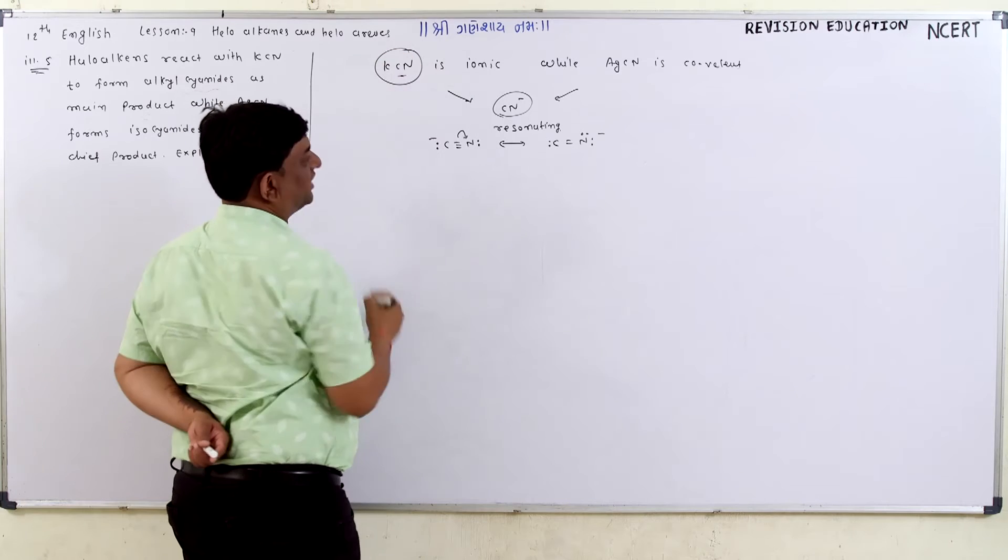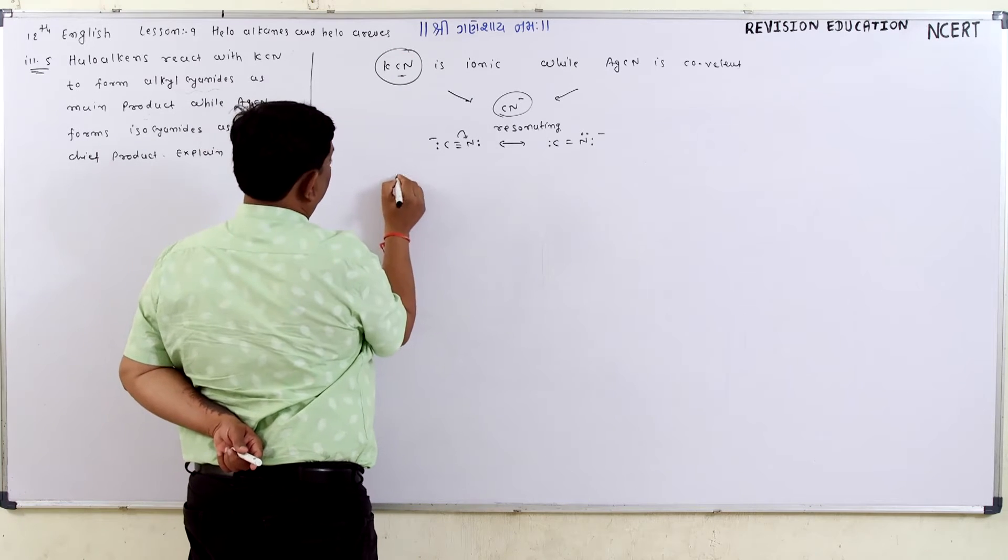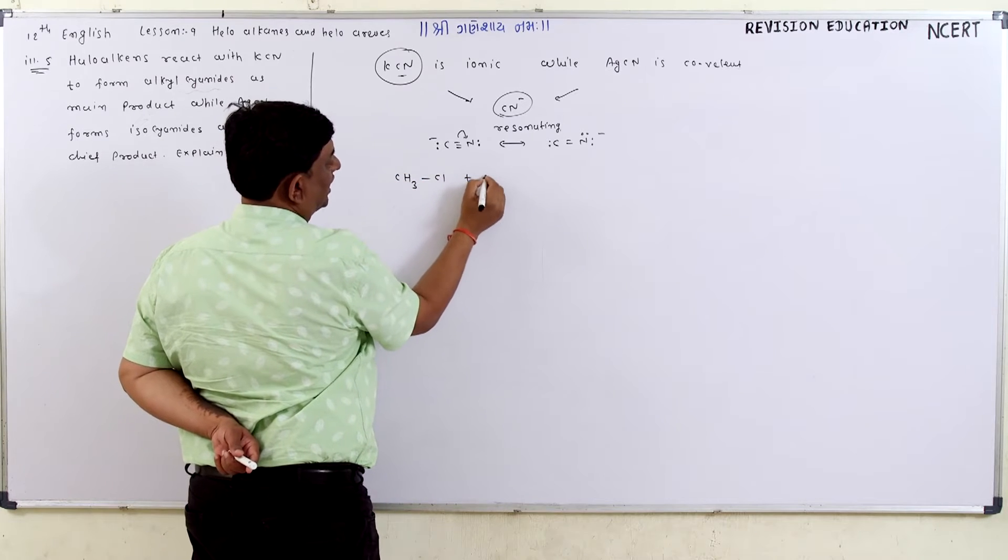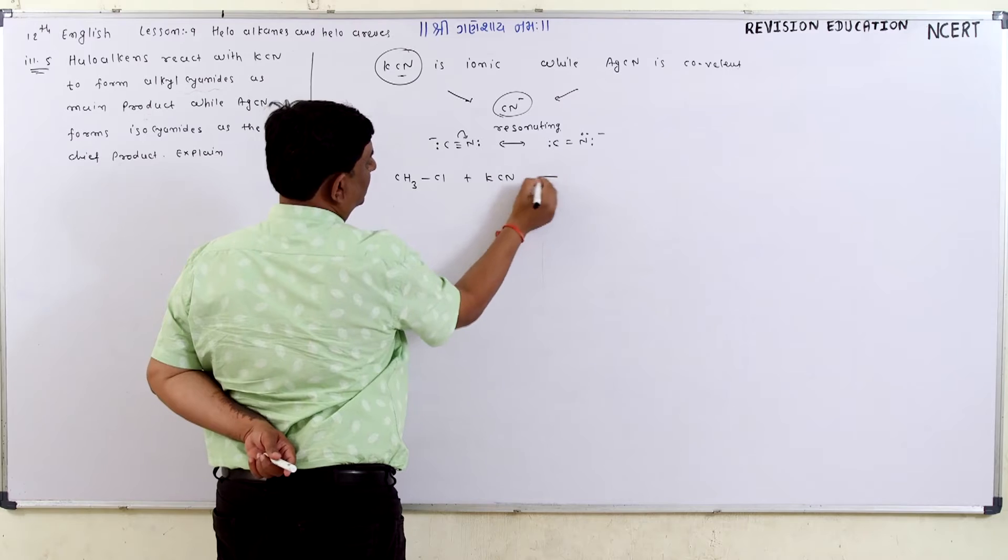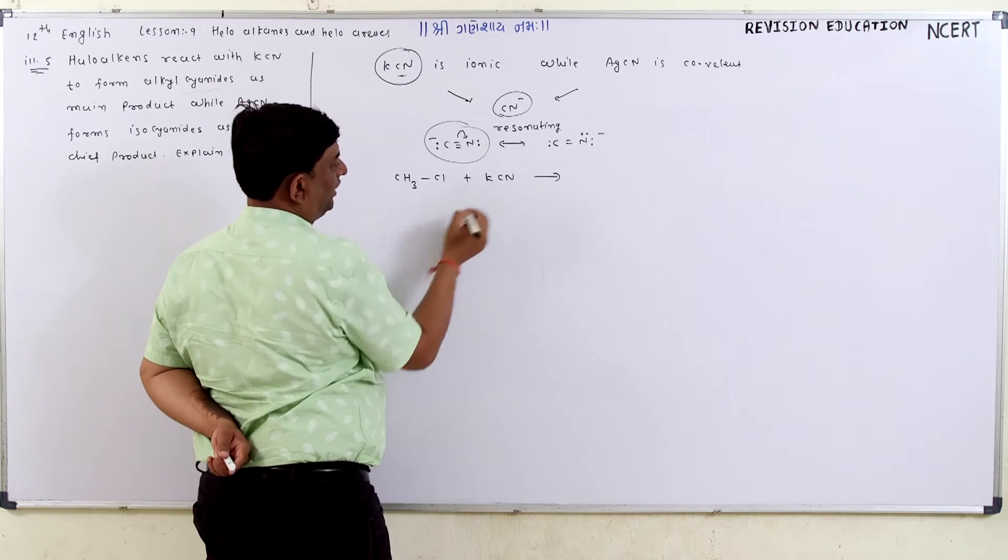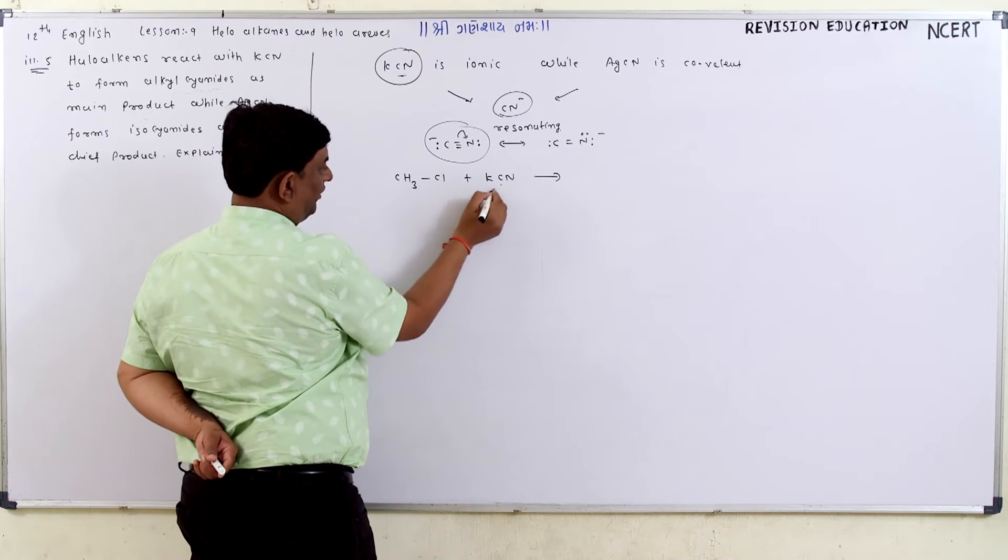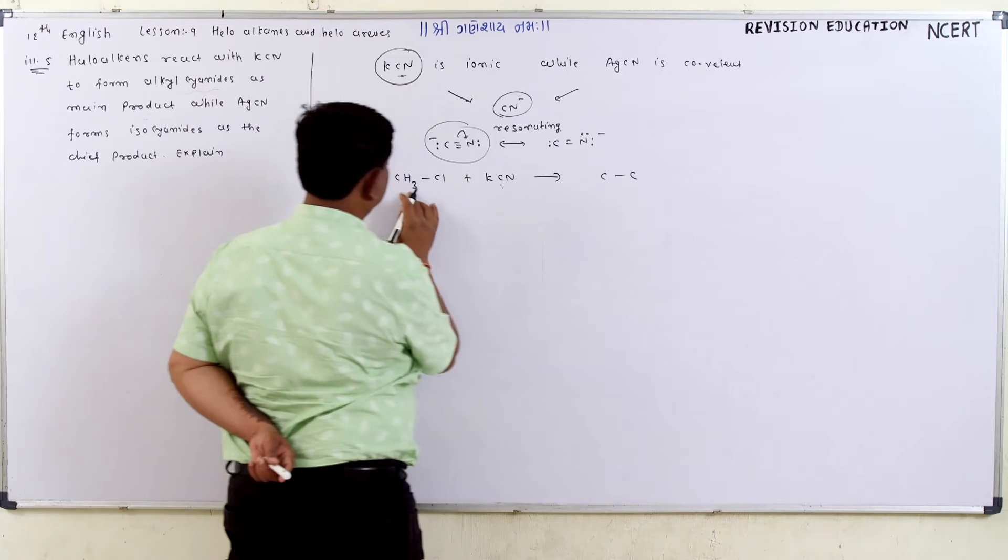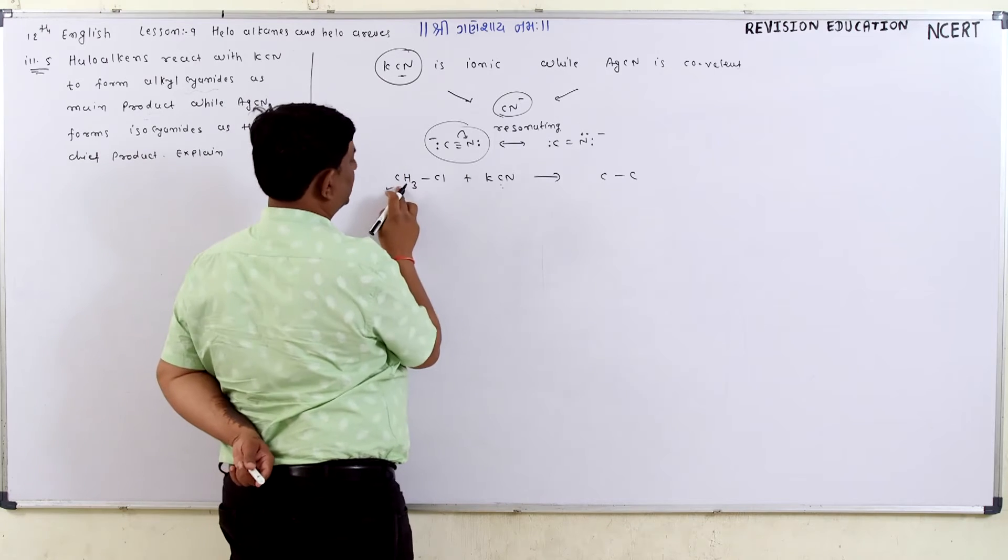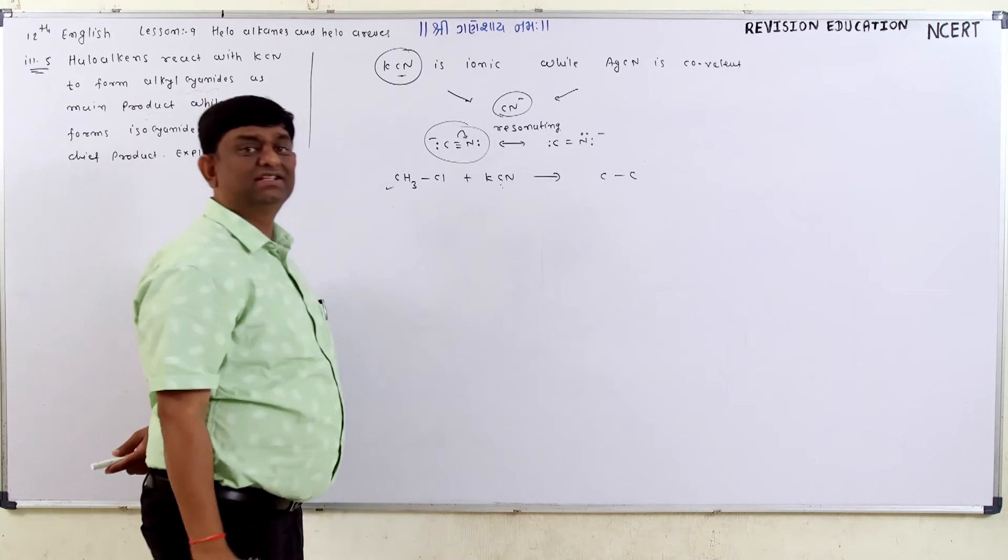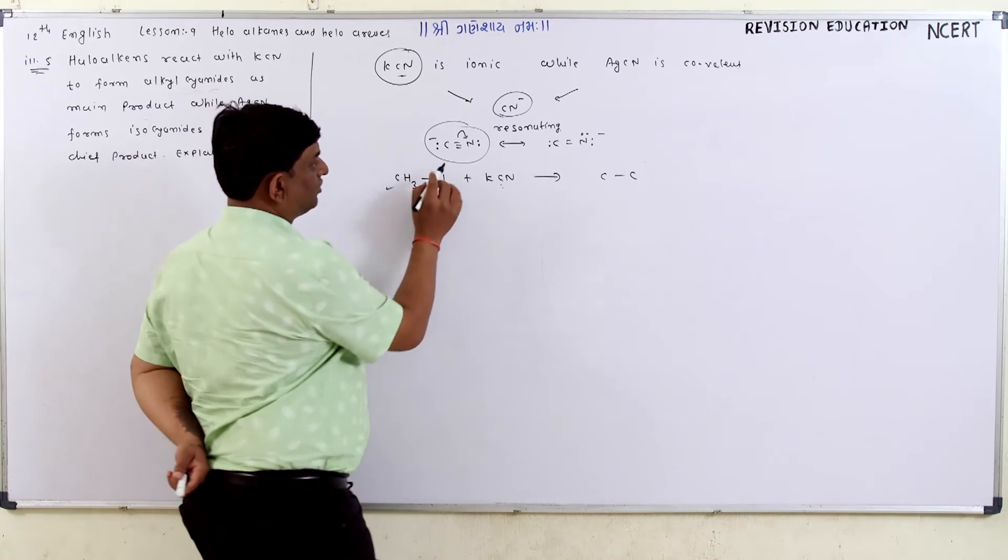When KCN is the reactant, I have the compound CH3Cl. If KCN reacts, this is the first compound, the carbon. Now it forms a strong C-C bond with this carbon. This is a cyanide carbon. How does it become strong?